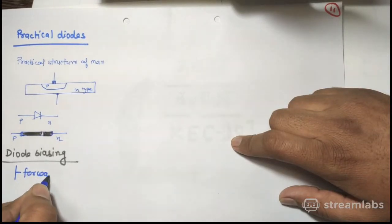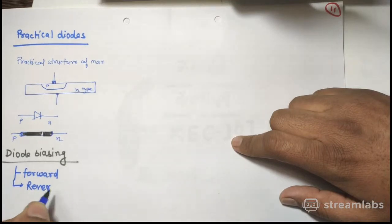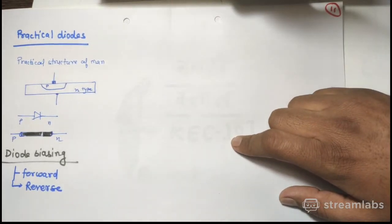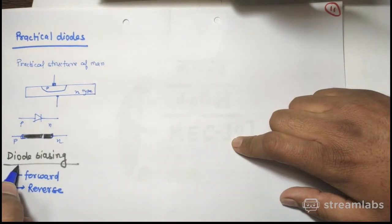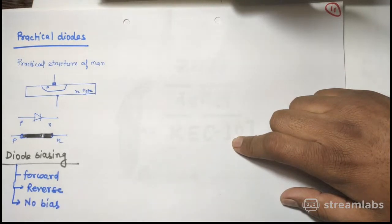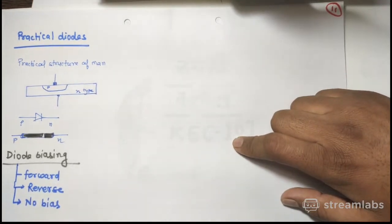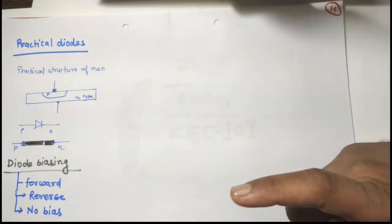And this can be reverse biased, and there can also be no biasing. When there is no biasing connected, there is no connection to the diode, then this is a no bias condition.